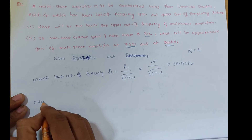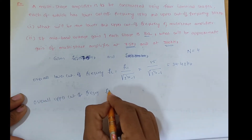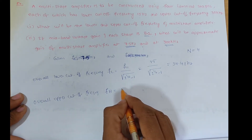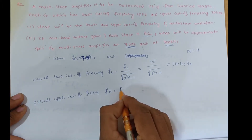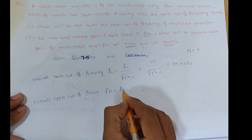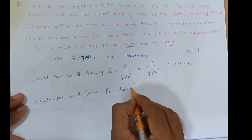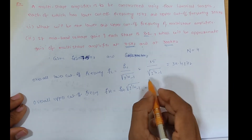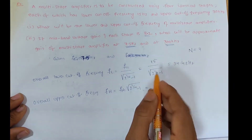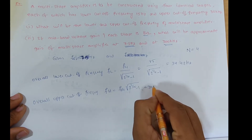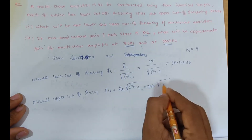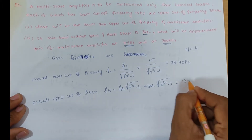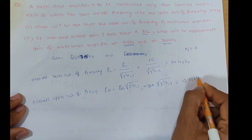Next, the overall upper cutoff frequency of the multistage amplifier, FH_S = FH1 × √(2^(1/n) − 1). The individual amplifier upper cutoff frequency is 30 kHz. So FH_S = 30 kHz × √(2^(1/4) − 1). By calculating, we get approximately 13.05 kHz.